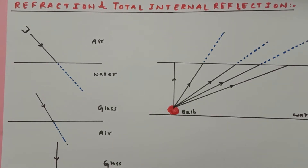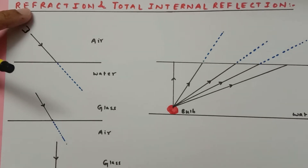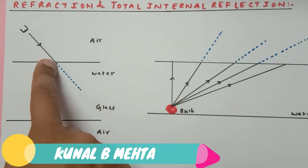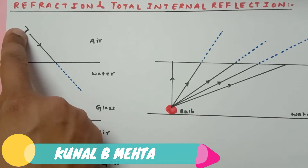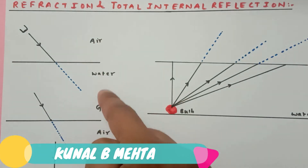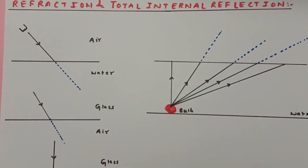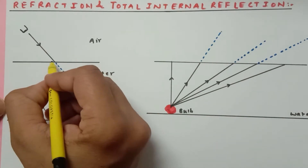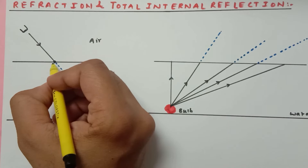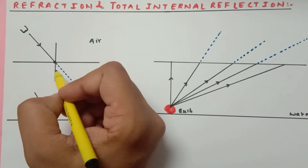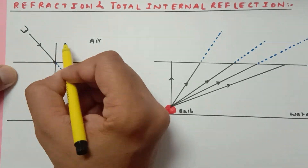After seeing the demonstration, it's time to understand the theory. Refraction is basically when light travels from one medium to another — during this process the speed of light changes and it deviates from its original path. Here, a ray of light from the laser strikes the surface separating both mediums: air and water. The point where it strikes the surface is called the point of incidence, and from here we draw a perpendicular line to the surface called the normal.